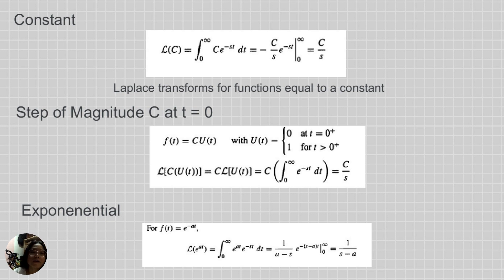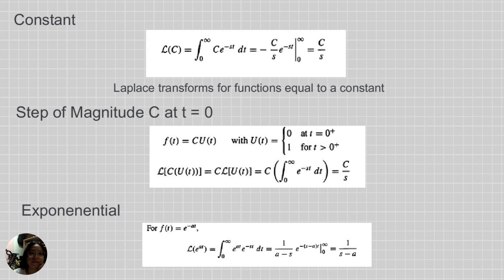For the Laplace transform of c u(t), it equals c times the Laplace transform of u(t), which equals c times the integral from zero to infinity of e^(-st) dt, giving c over s.